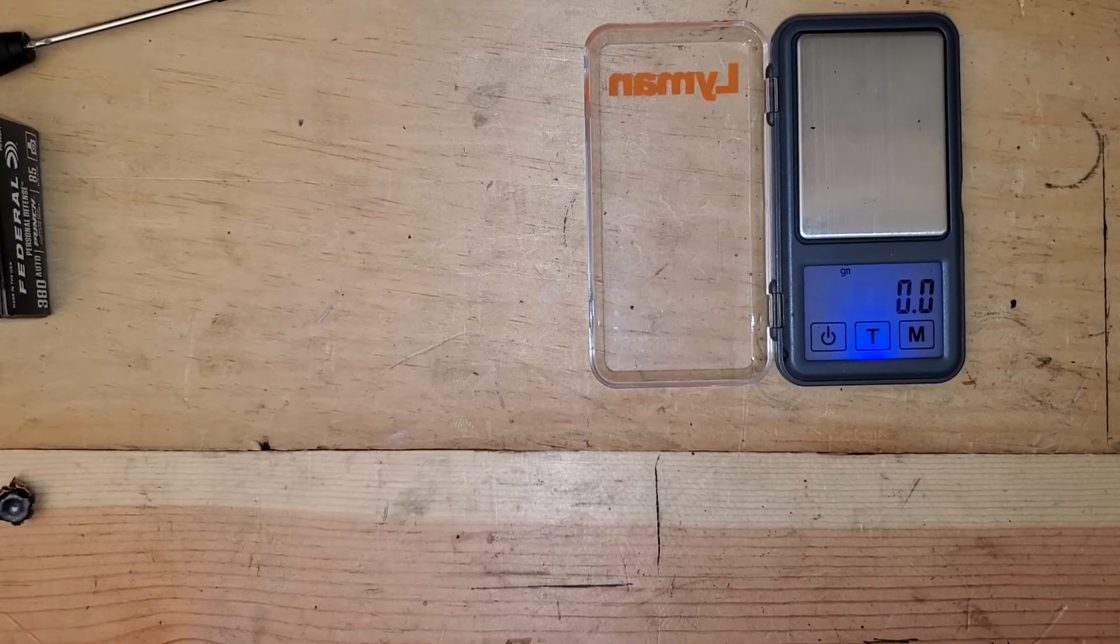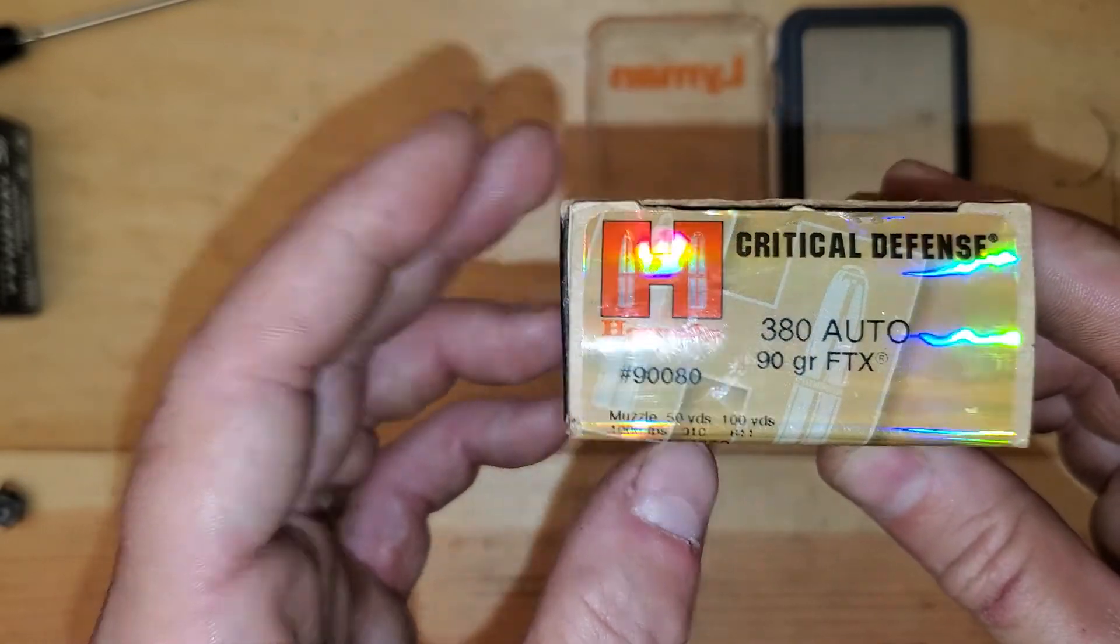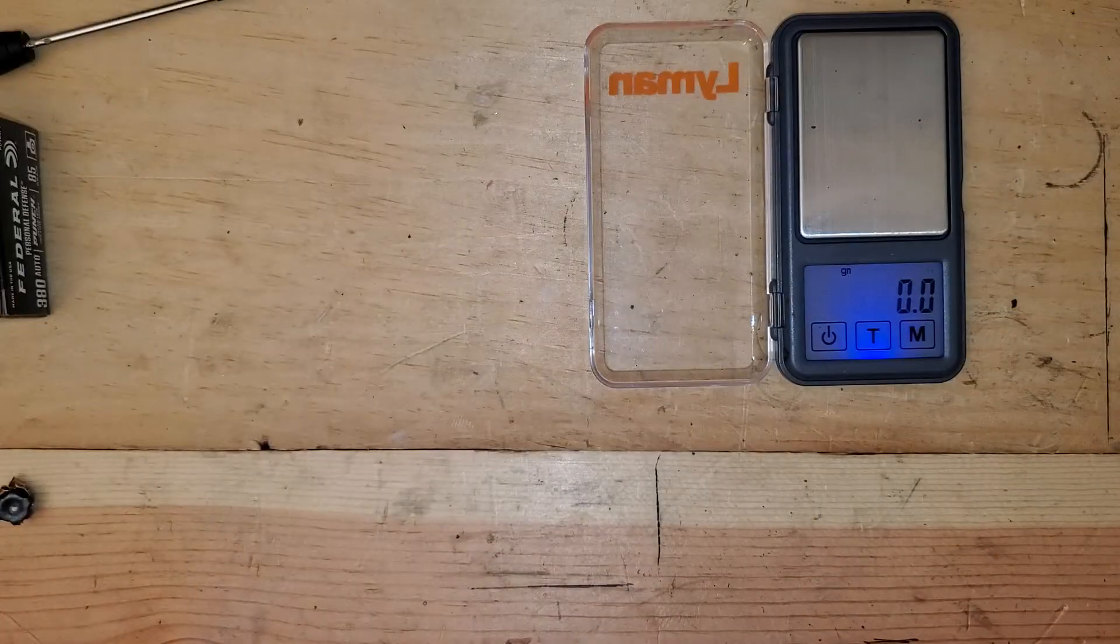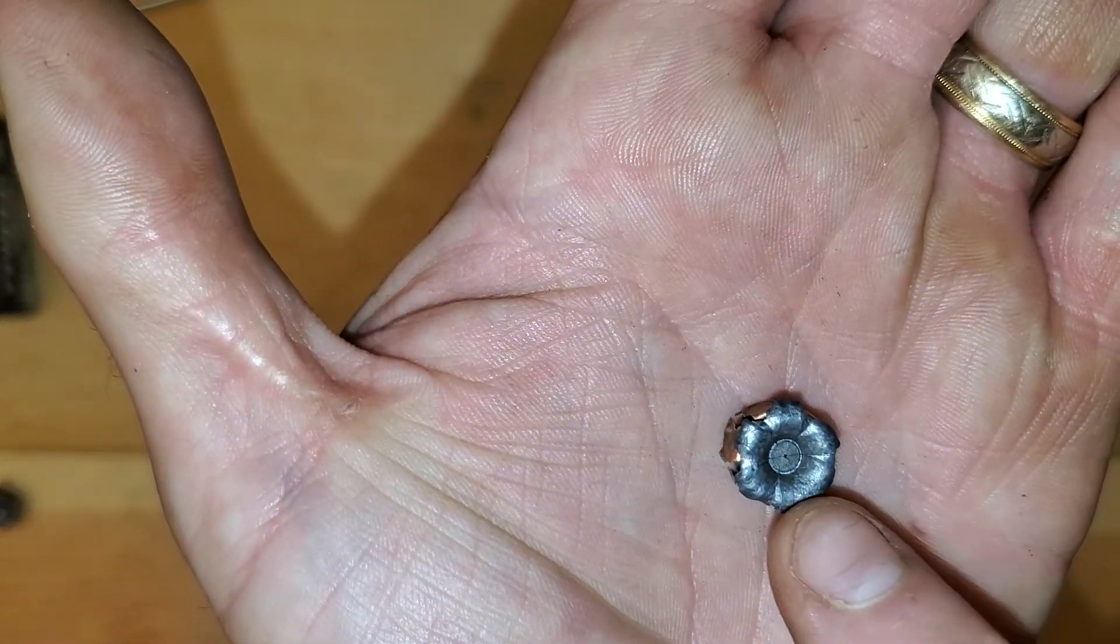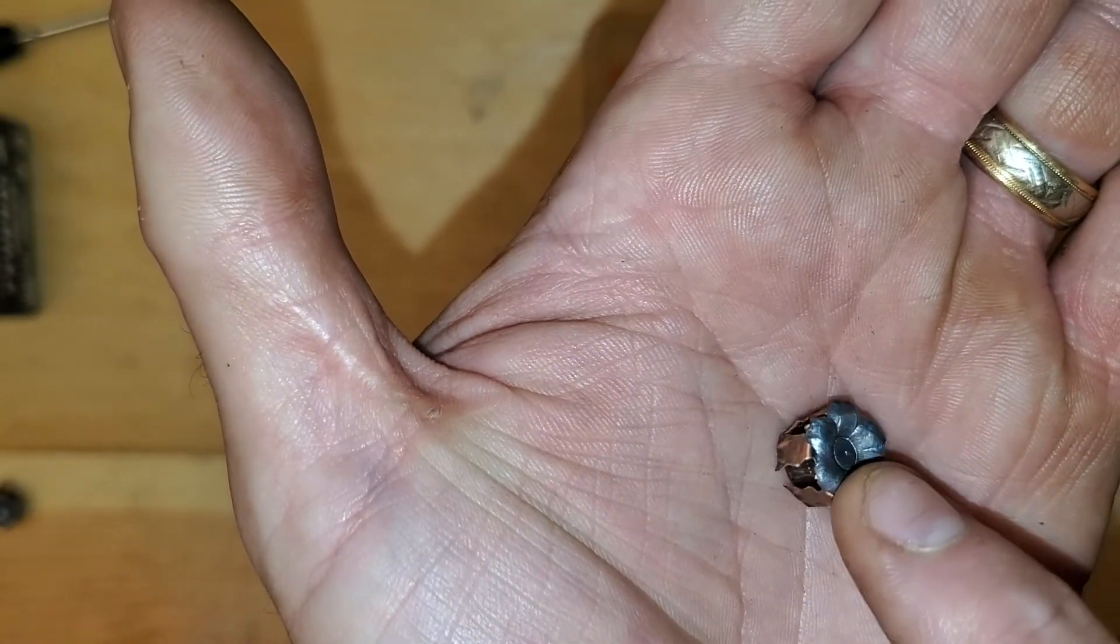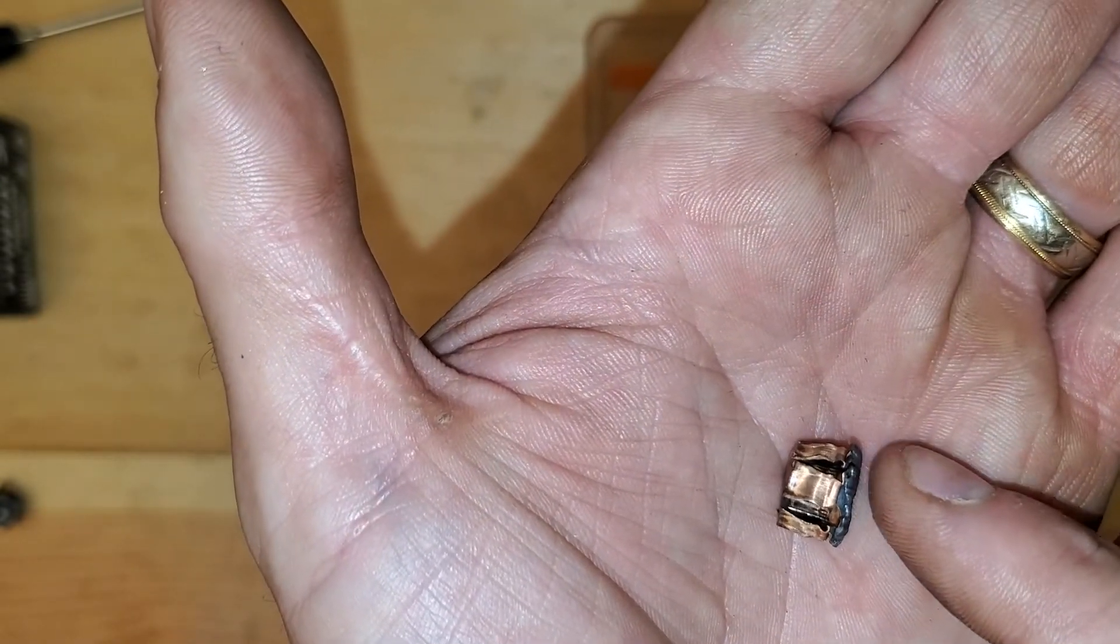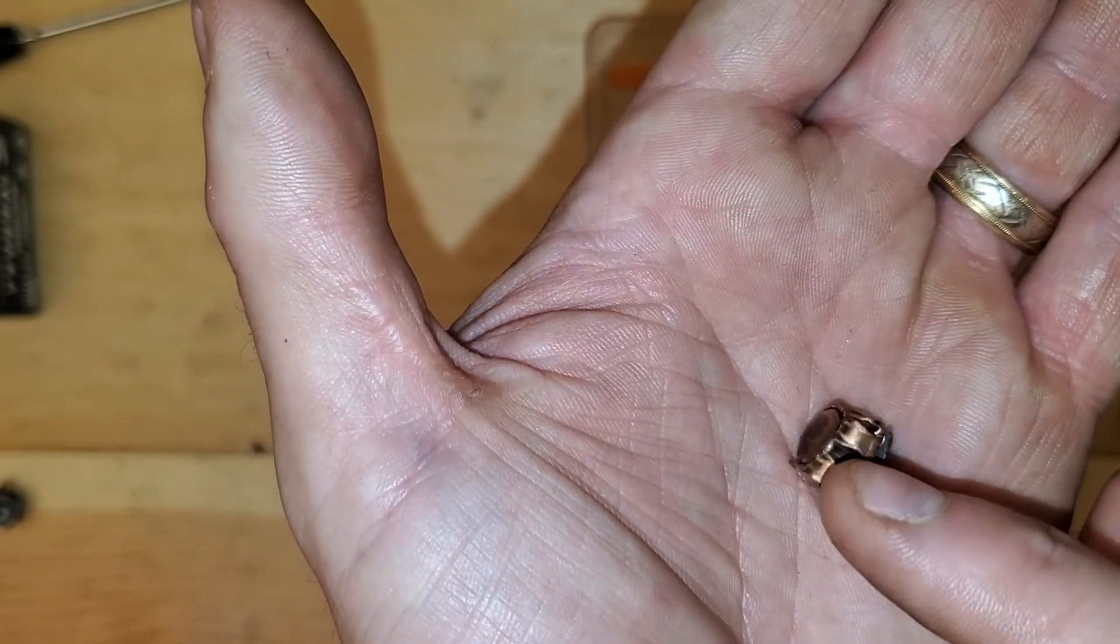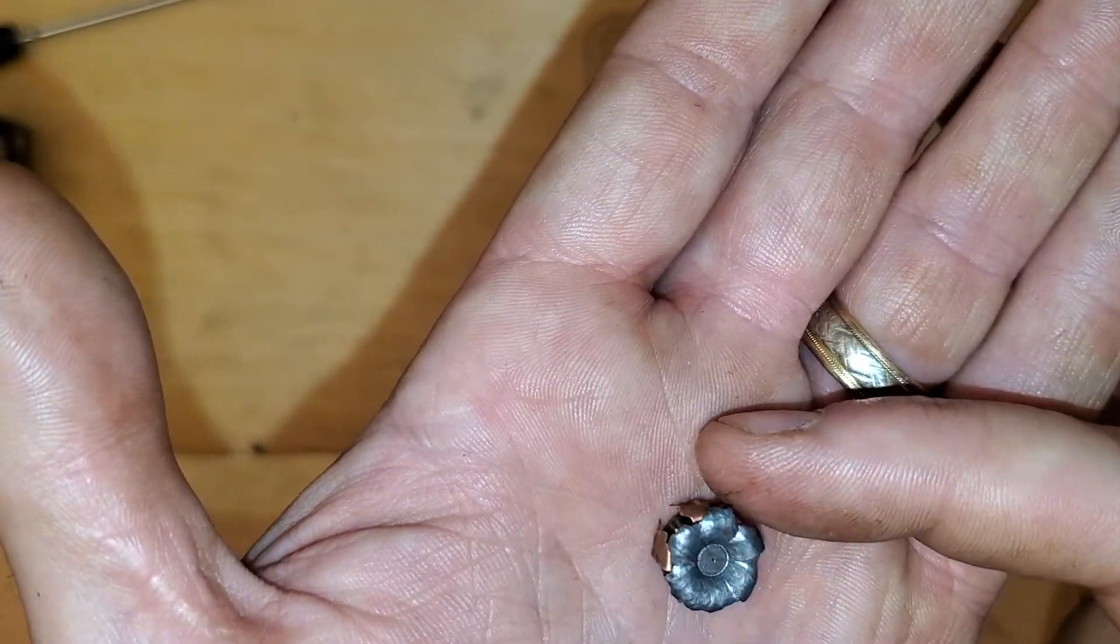All right guys, so we're going to start with the 380 Auto 90 grain FTX Critical Defense Standard Pressure. I do not have any unfired versions of this bullet in 380. I fired everything I had at the range. This is the fired projectile, that characteristic dimple in the middle from the little red rubber tip, the long petals. I mean, this looks exactly like a 9 or a 45 in critical defense. Hornady's self-defense ammo is very consistent from caliber to caliber. This, I mean, if you didn't know any better and I told you this was a 9, you might believe it just on video at least.